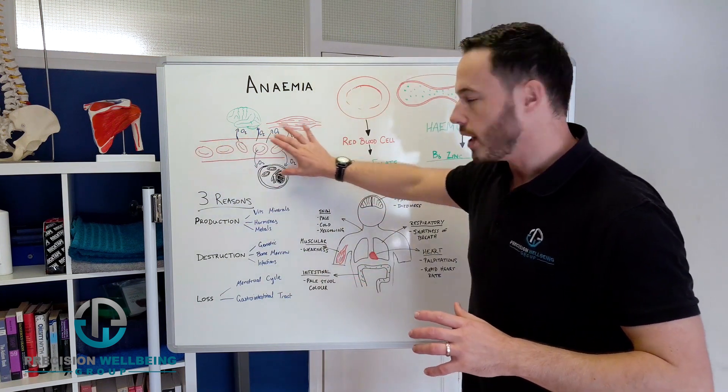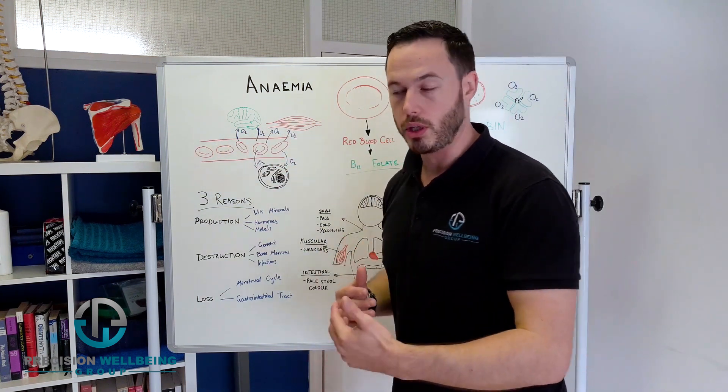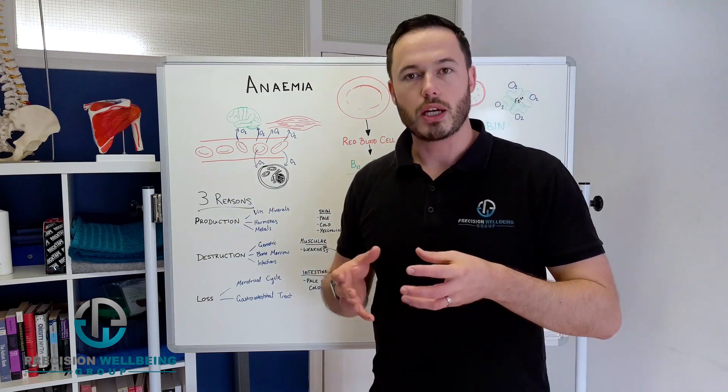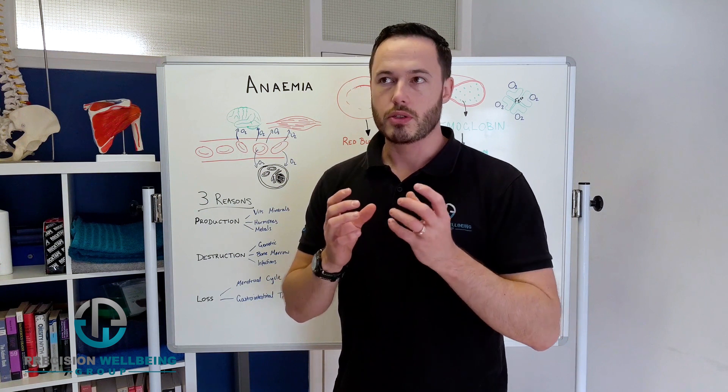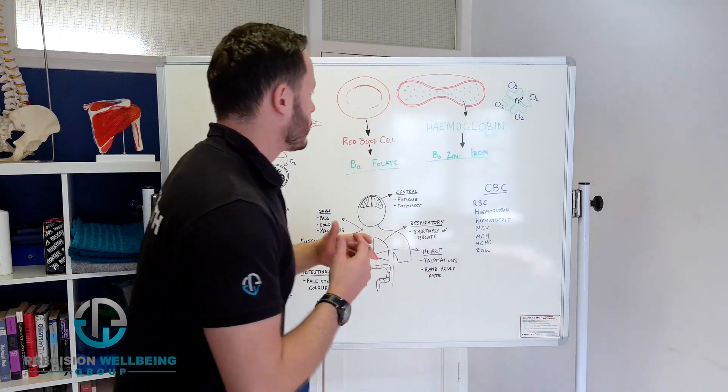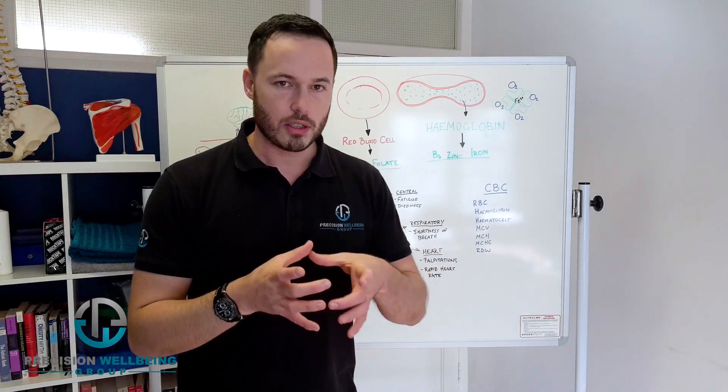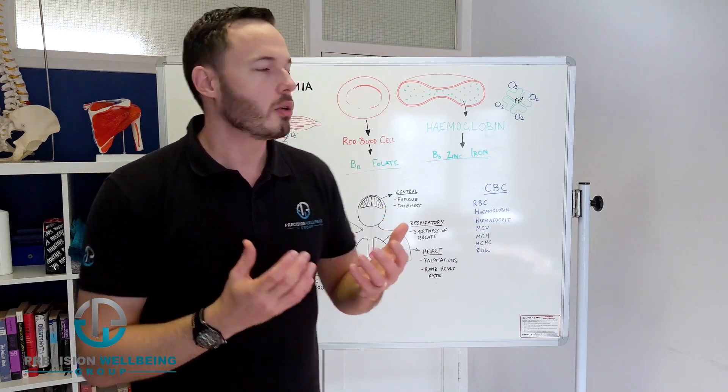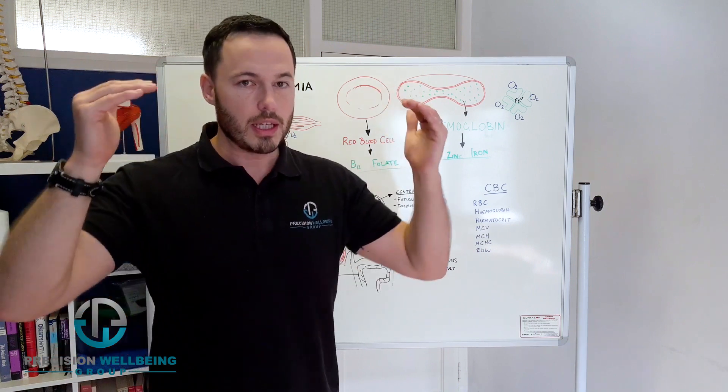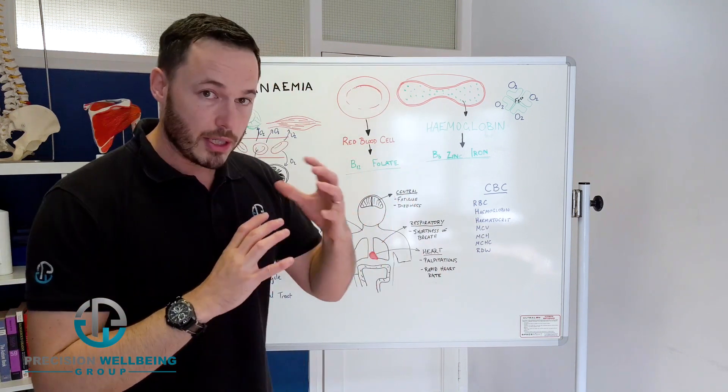What happens is we have our blood going through the body, and in that blood we have our red blood cells. Now every red blood cell is designed to carry oxygen. So a red blood cell is a disc-shaped cell and it's known as biconcave. What that means is that it dips in the middle and it dips on both sides.